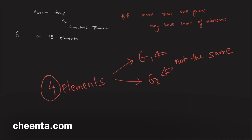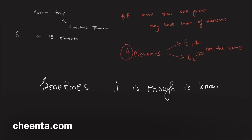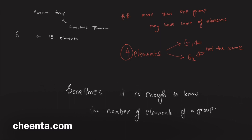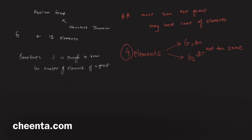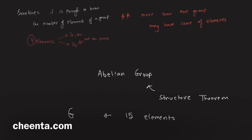But sometimes it is enough to know the number of elements of a group — just by knowing that, we can completely understand the group. We started with this 15-element example and that is a very good example in this context.